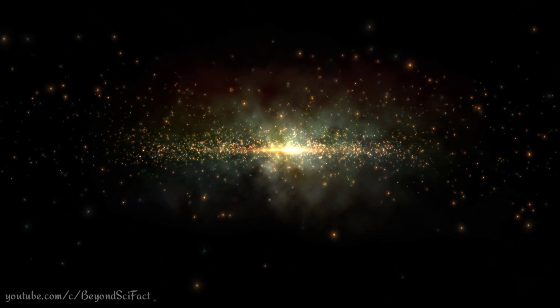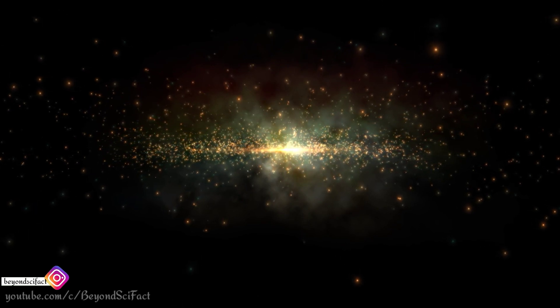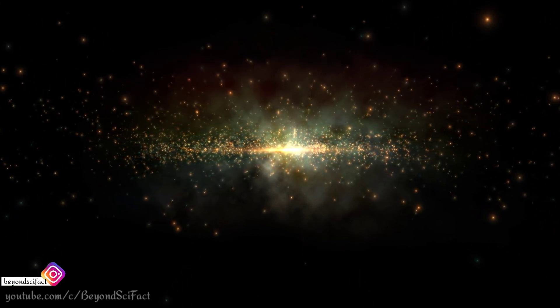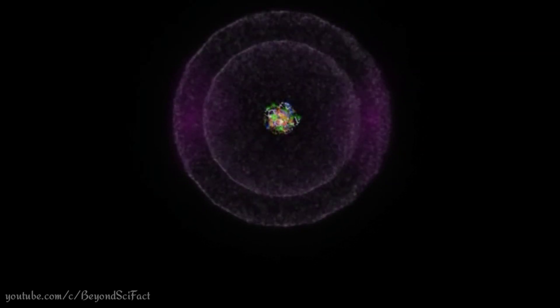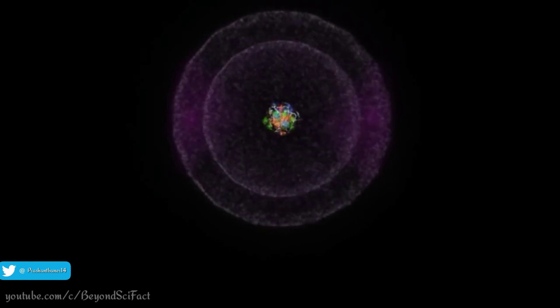According to physicists, our universe consists of 25% dark matter and only 5% visible matter. But have you ever thought about how a single atom of this visible matter was made in this universe? Today in this video I am going to answer you this question.